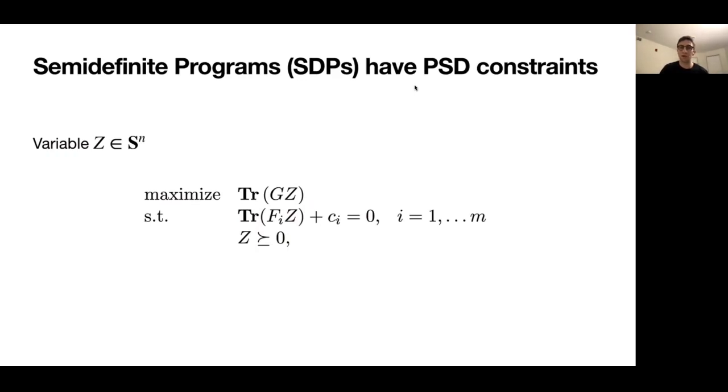And so these optimization problems come up all over the place. SDPs can be found everywhere from statistics and machine learning to combinatorial optimization to circuit design and mechanical truss design. They turn out to be enormously useful modeling tools. So odds are, whatever field you're in, there's some set of problems that can be modeled as SDPs.